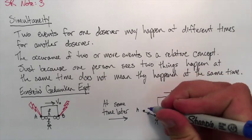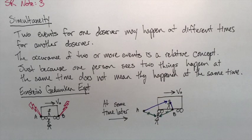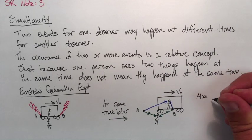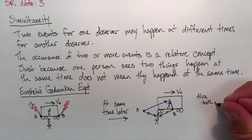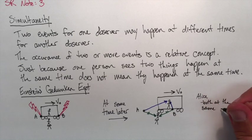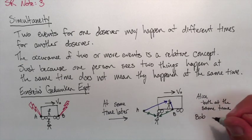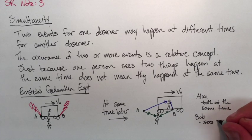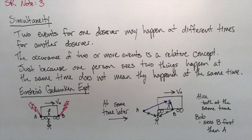Alice is equidistant from both of those, so the light is going to travel from B and from A and get to her eyes at the same time. Bob, on the other hand, is now closer to B than from A, so Bob will see B happen and then will see A happen. So again, Alice sees both things happen at the same time, but Bob sees B and then A.